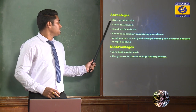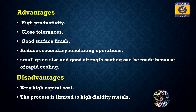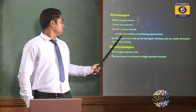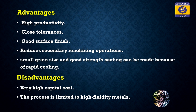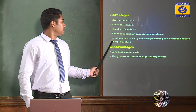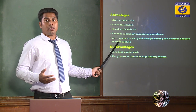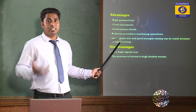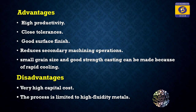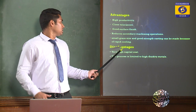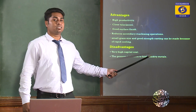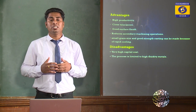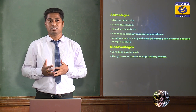Advantages of Die Casting Process: high productivity, close tolerance, good surface finish, reduced secondary machining operations, small grain size, and good strength due to rapid cooling. As grain size decreases, hardness increases per the Hall-Petch equation. Disadvantages: very high capital cost, and the process is limited to high-fluidity metals — higher fluidity means lower viscosity.